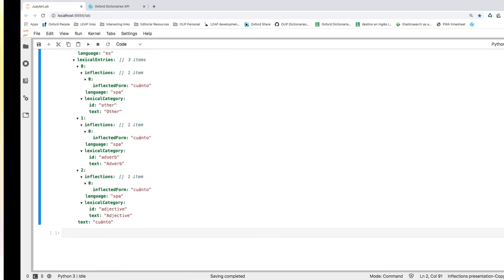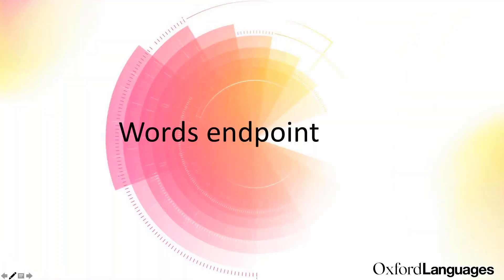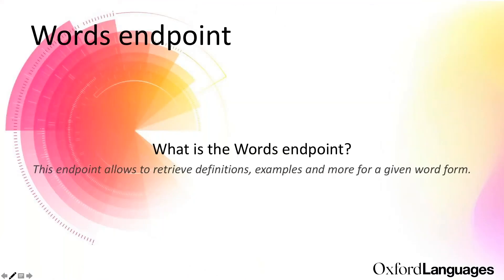That's all for the inflections endpoint. Now we're going to see what the words endpoint is. The words endpoint is able to retrieve data for any words in the language — it could be an inflection, it could be a dictionary entry, or it could be a root form such as an infinitive. The only restriction is that the word needs to be in the data set.